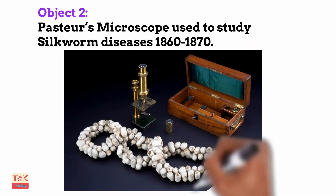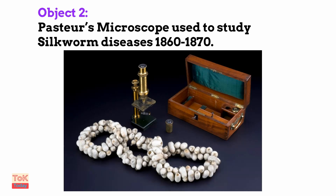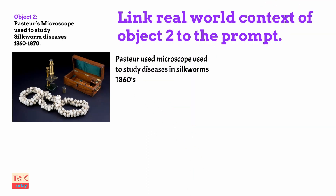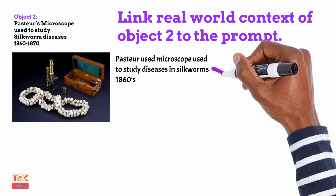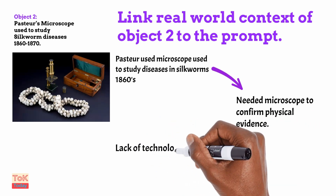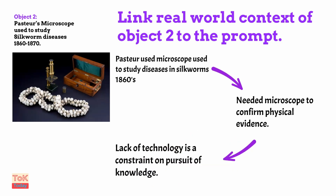Moving on to object two: Louis Pasteur's microscope, which he used to study diseases in silkworms in the 1860s and 1870s. Linking object two to the prompt, we explain that Pasteur was studying diseases in silkworms and needed the microscope to confirm physical evidence for pre-existing theories. If he hadn't had the microscope, he wouldn't have been able to confirm that physical evidence — and as such, a lack of technology is a constraint on the pursuit of knowledge.